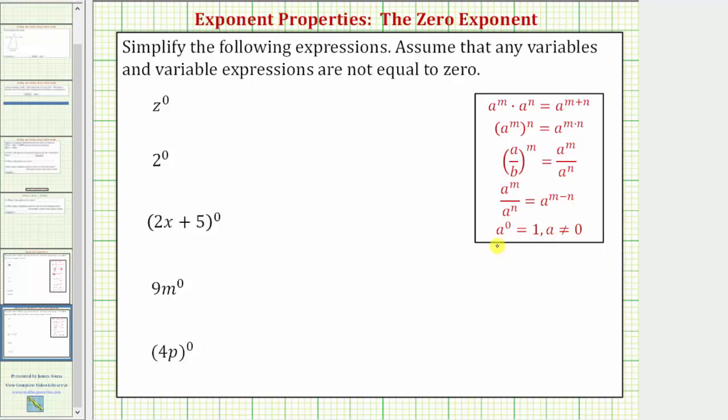For a brief explanation of why this is true, let's consider a quotient. Let's consider five squared divided by five squared. Well, we know any non-zero value divided by itself is equal to one, and therefore we know this quotient equals one.